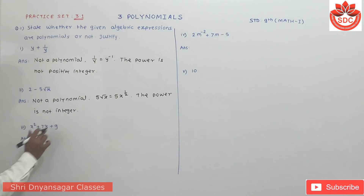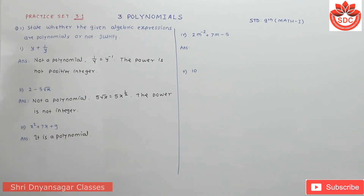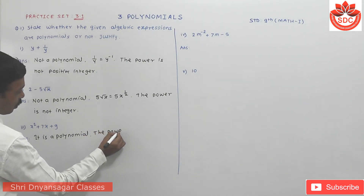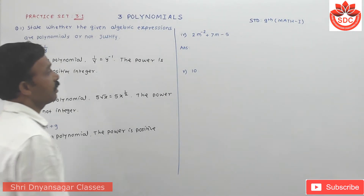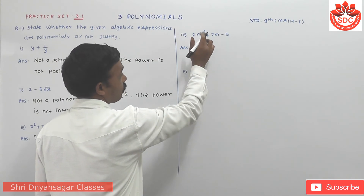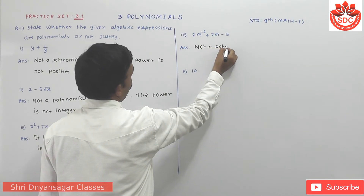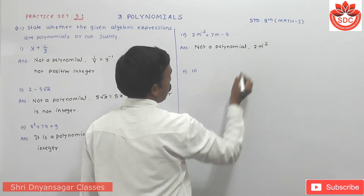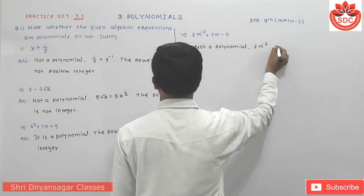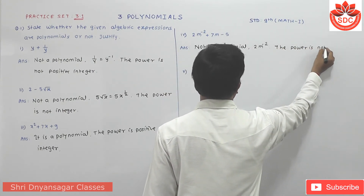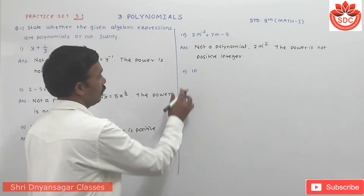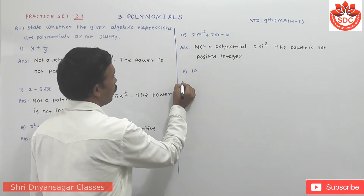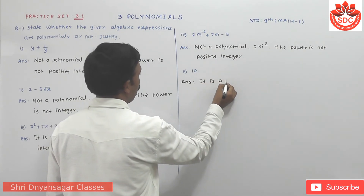Third: x² + 7x + 9 — here all powers are positive integers, therefore it is a polynomial. Fourth: 2m⁻² — the power is −2, which is not a positive integer, so this is not a polynomial. The fifth one is a constant polynomial, so the answer is it is a polynomial.